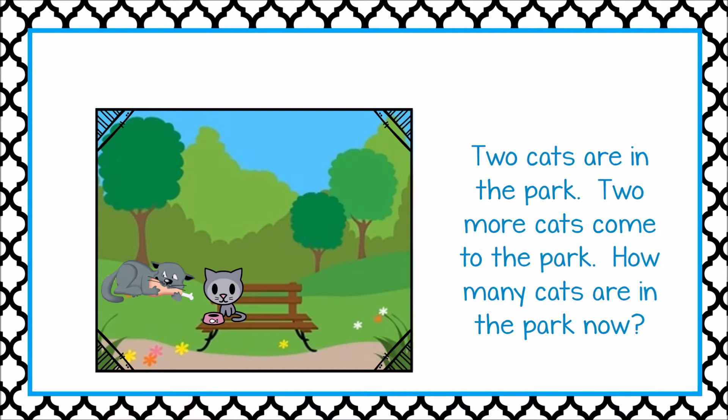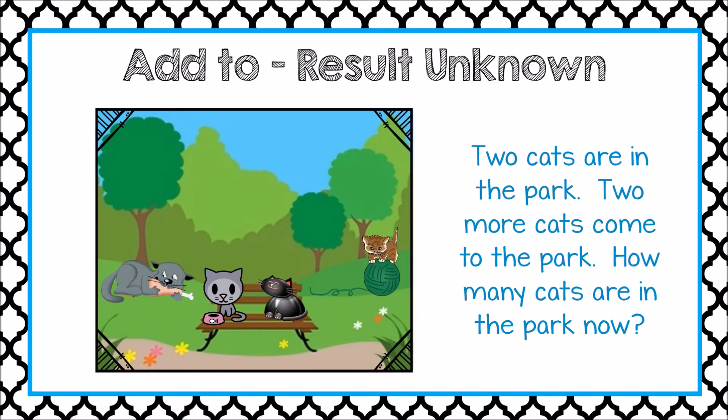Two cats are in the park. Two more cats come to the park. How many cats are in the park now? We know the starting amount is two, we know the change — two more cats are added to the group — we just don't know the result or ending amount. So this is an add to, result unknown problem.